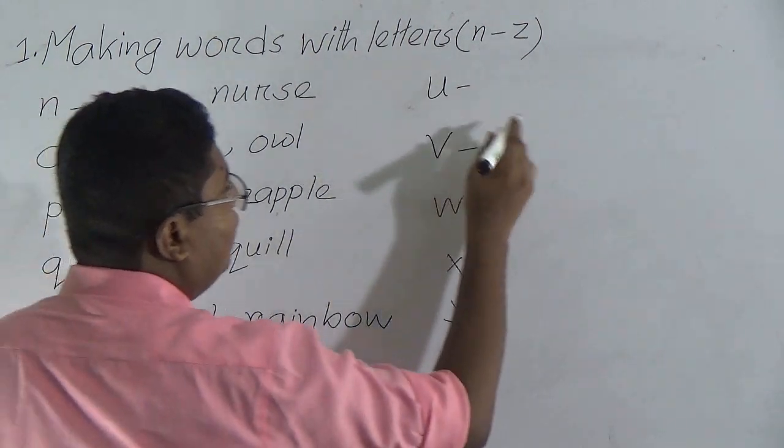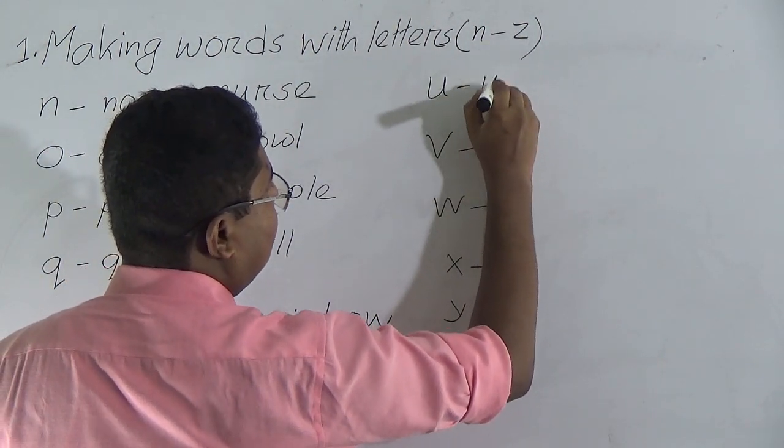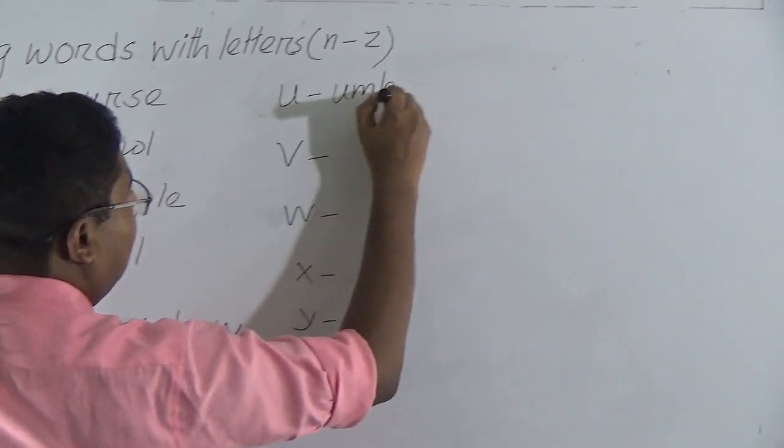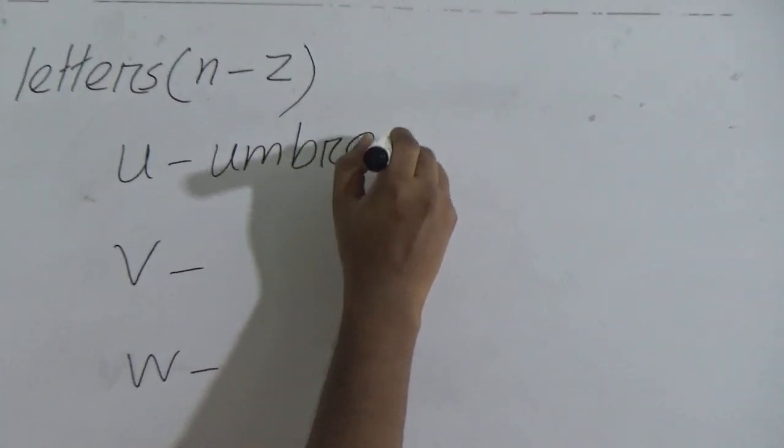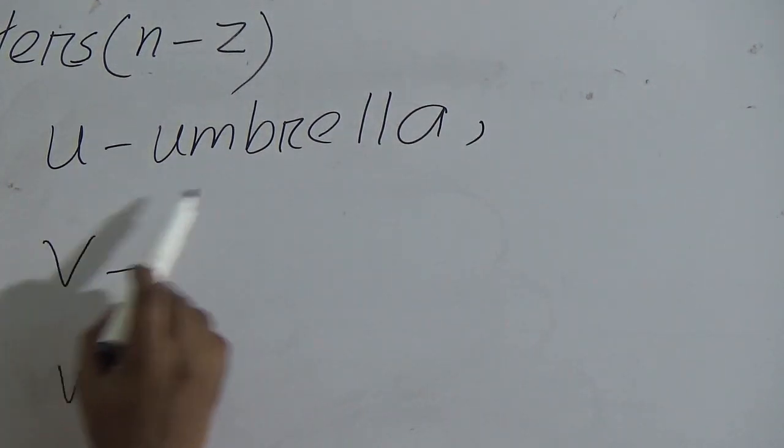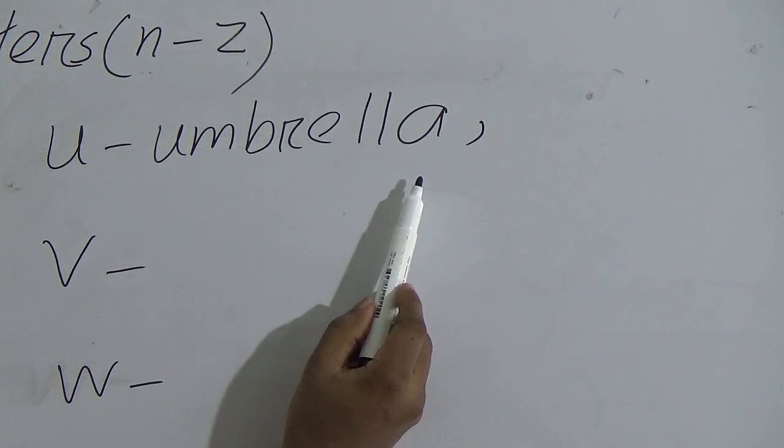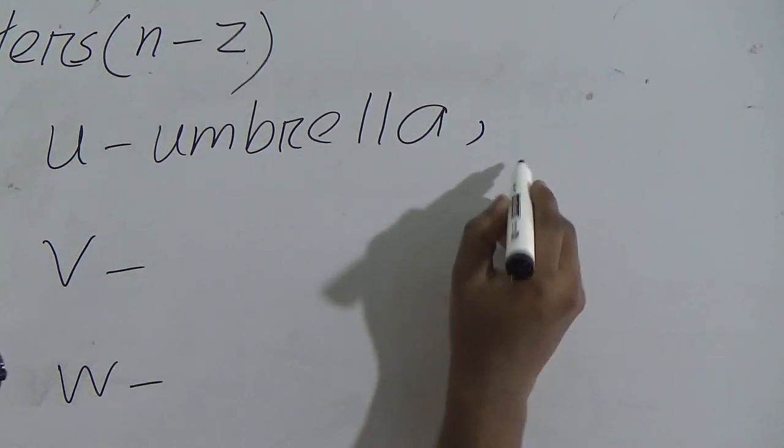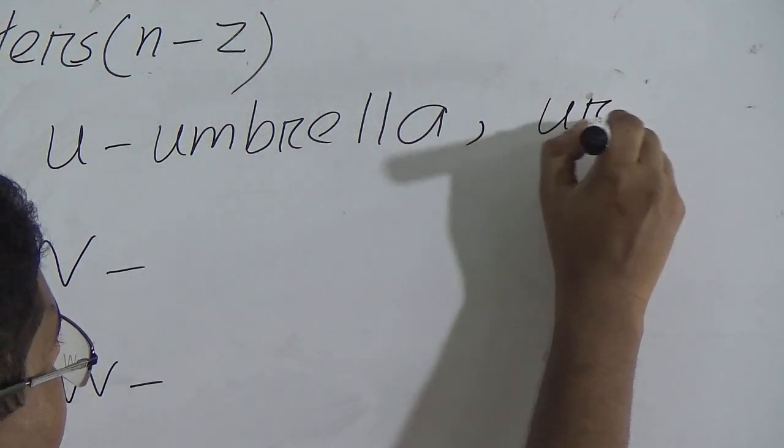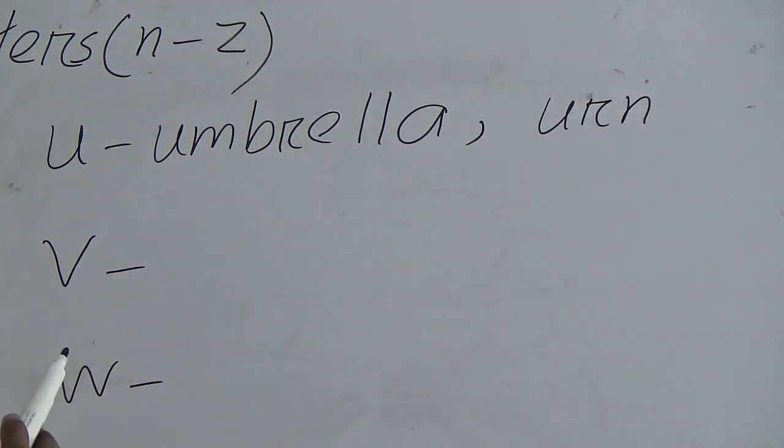Next one: U for umbrella, spelling U-M-B-R-E-L-L-A, umbrella. And U for urn, U-R-N. So U for umbrella, U for urn.